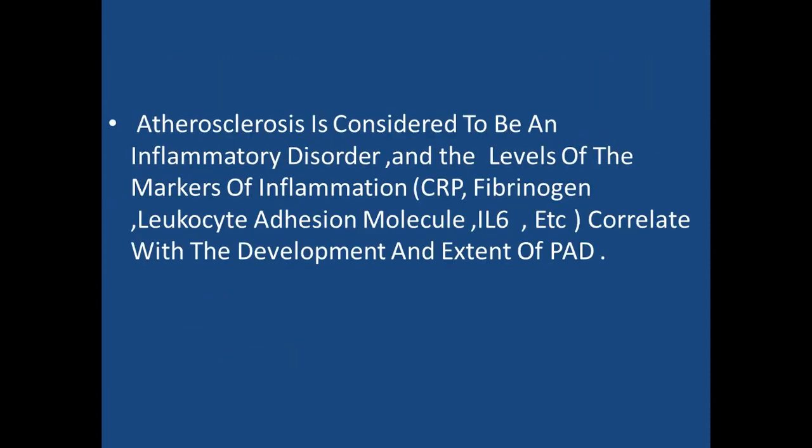Atherosclerosis is considered to be an inflammatory and systemic disease, and therefore it can happen in any vascular territory in the body. It is associated with elevated markers of inflammation, like C-reactive protein, interleukins, and fibrinogen, which are correlated with the development and extent of peripheral arterial disease.